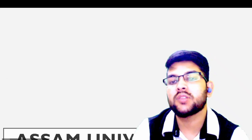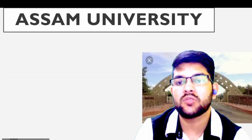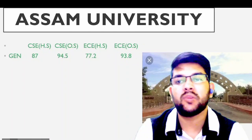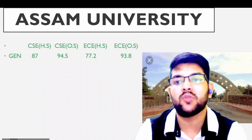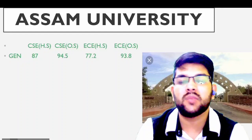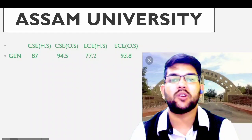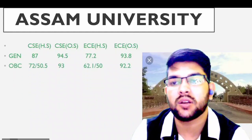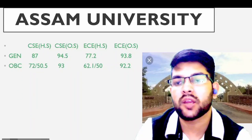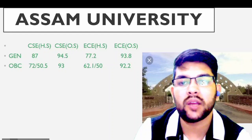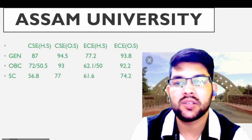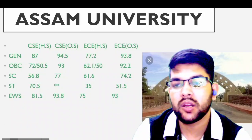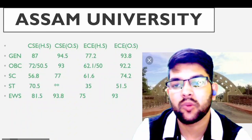Next is Assam University. Both Home State and Other State cutoffs are available. For CSE — General: 87 (Home State) and 94.5 (Other State); EC: 77.2 and 93.8. Considering Other State: OBC 93 and 92.2; SC 77 and 74; ST 51.5; EWS 93 and 93.8 percentile.